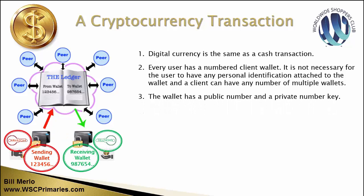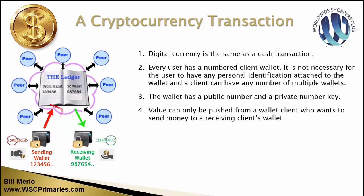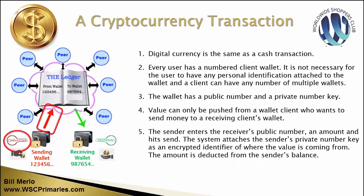The wallet has a public number, which is the number you give people, and a private number. That private number is unique - it's generated by the system, so every single transaction is unique. That's how all the people around the world track and verify what's going on. The value can only be pushed from a sending client's wallet to a receiving client's wallet. That's all that can happen.